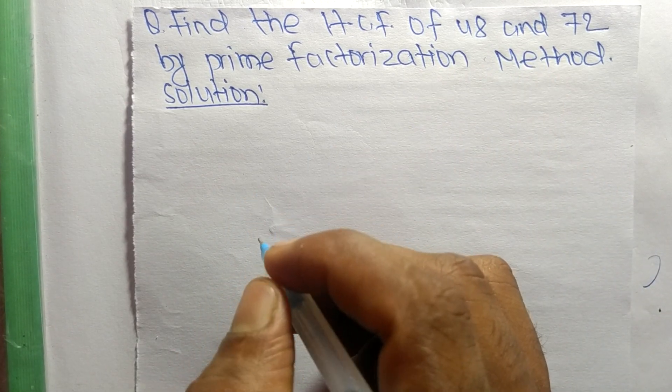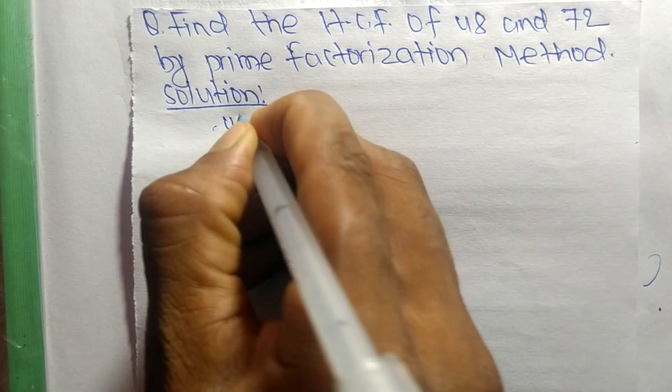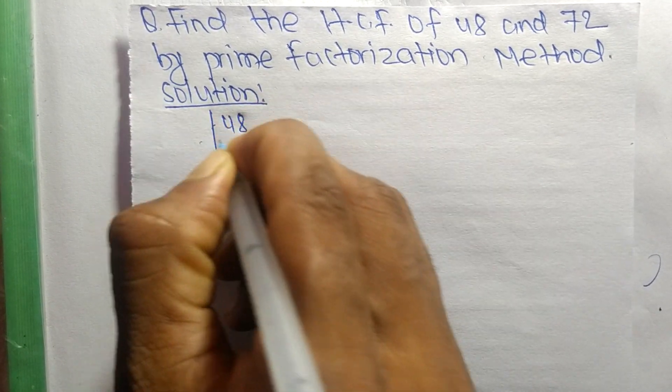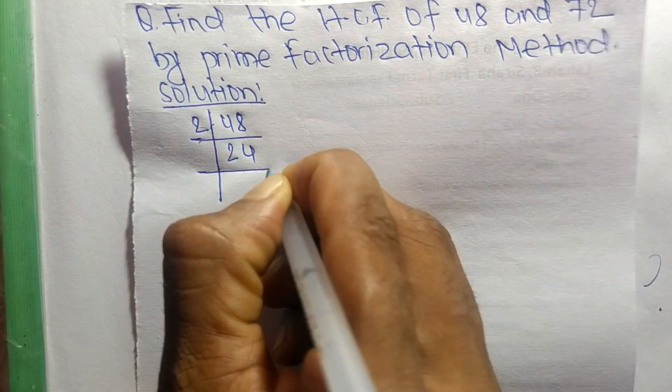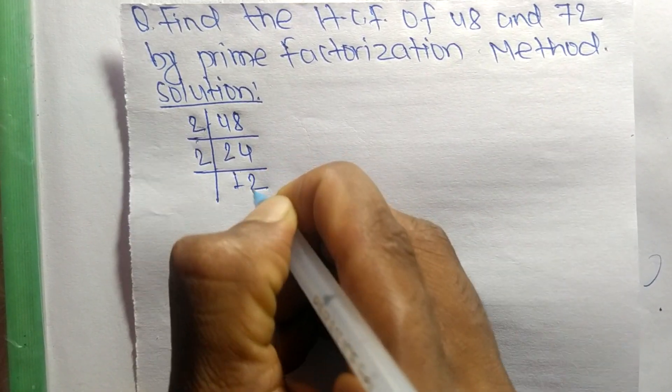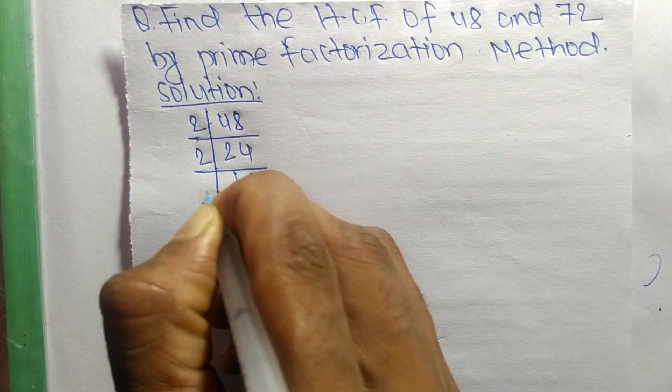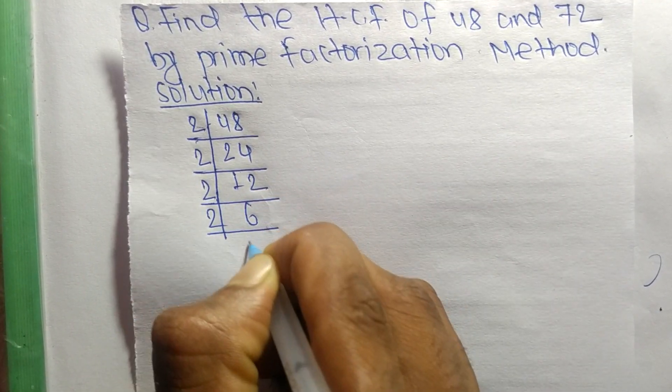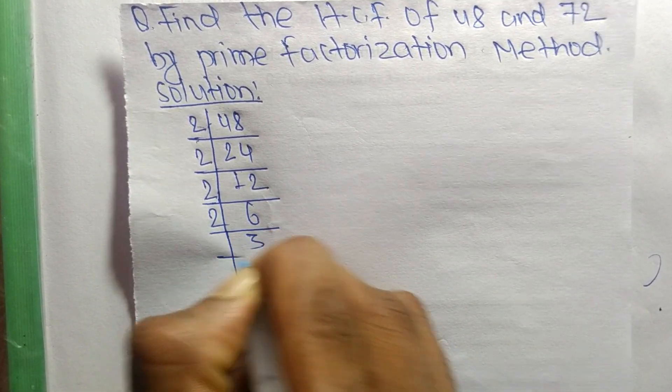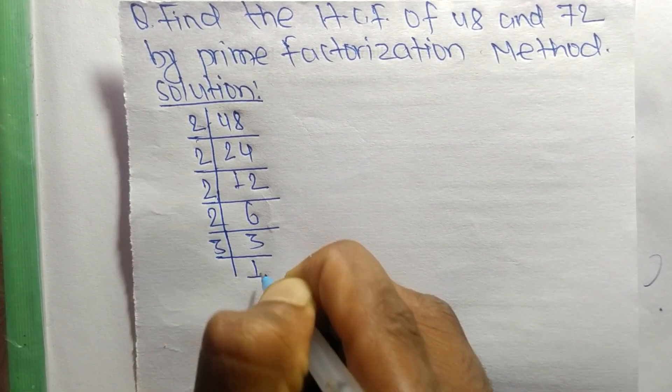First of all we find out the prime factors of 48, so it is 2 times 24 equals 48, 2 times 12 equals 24, 2 times 6 equals 12, 2 times 3 equals 6, and 3 times 1 equals 3.